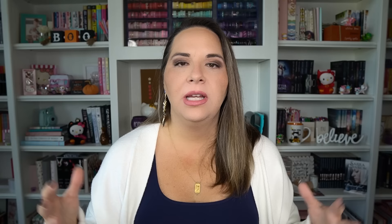The world building is everything about your character's world: their history, the politics, the rules of this world (especially for a magical system), the locations and physical buildings, the layout of your town or country, the geography, the animals or creatures, nature, magic, the weather, culture, trade and supplies, language, religion, population, their beliefs, their myths, conflicts or wars, economics — all of these types of things go into your world building. But how deep you go really depends on the type of story you're writing.